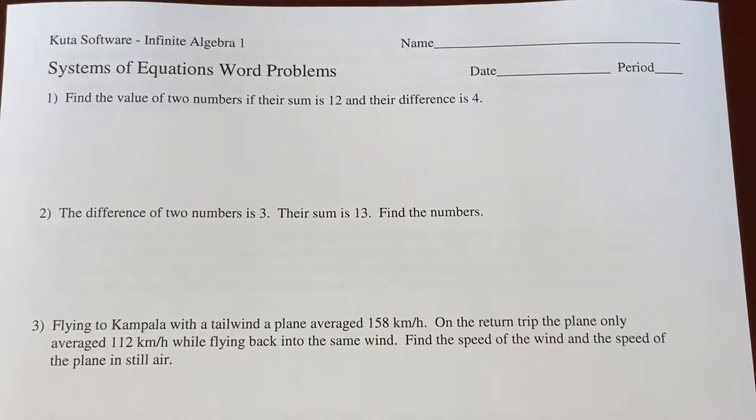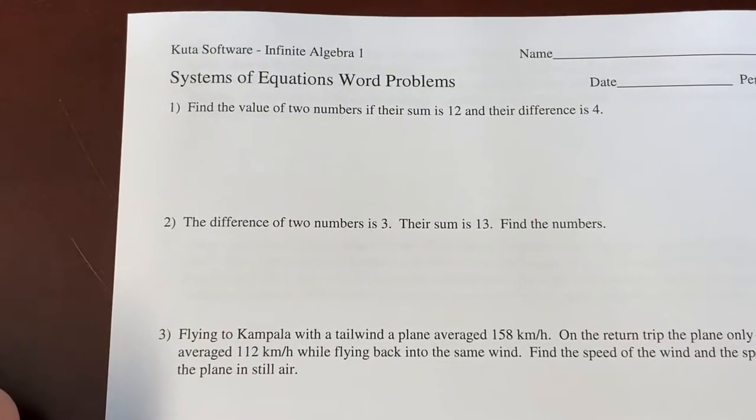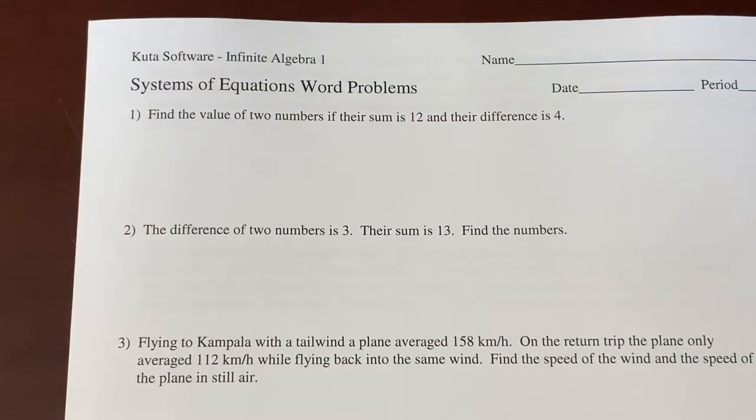Nonetheless, here we go. I'm just going to take you through some word problems here, and then I'm going to assign you some more, and we're going to keep it simple for this last week. Alright, let's roll. So, we'll do number one here together, where it says, find the value of two numbers if their sum is 12 and their difference is 4. So, this is very straightforward. Oftentimes, a problem like this is so straightforward that students overthink it and complicate it a little bit.